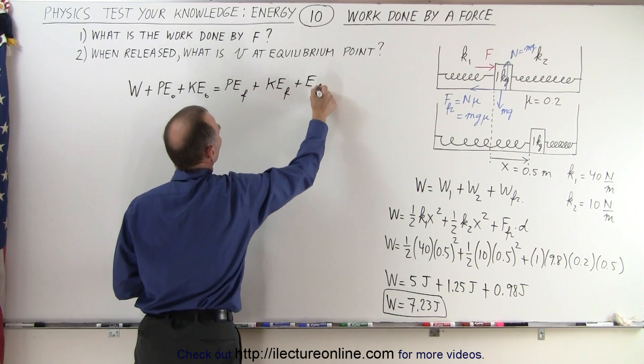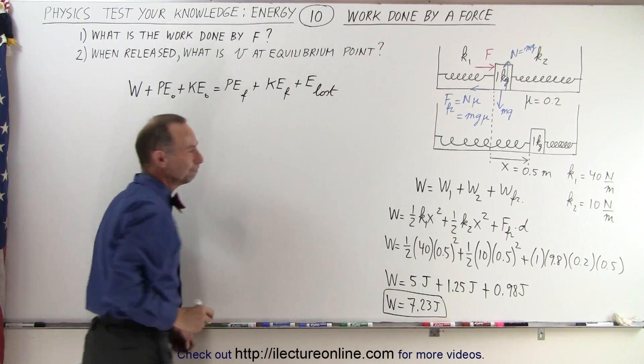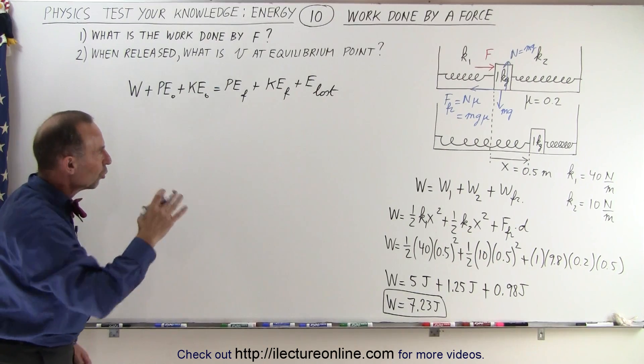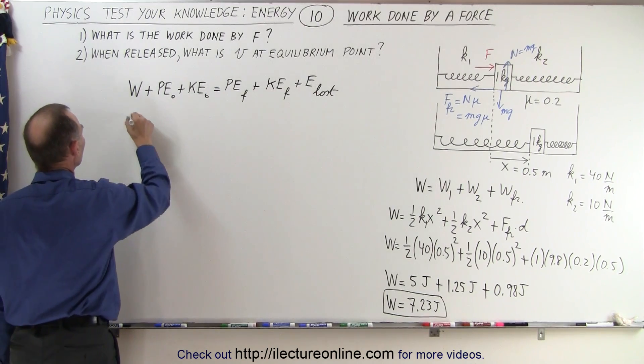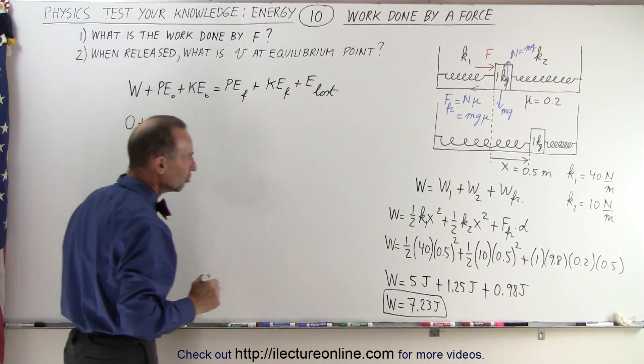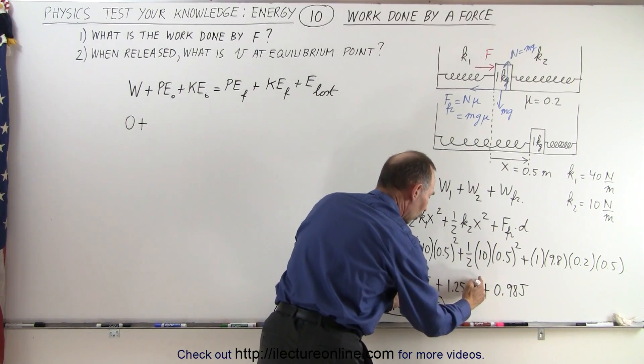In this case to overcome friction. So when we let go there's no work put into the system, so that's equal to 0. The potential energy stored in the system is the potential energy that's stored in those two springs, which is a total of 6.25 joules.